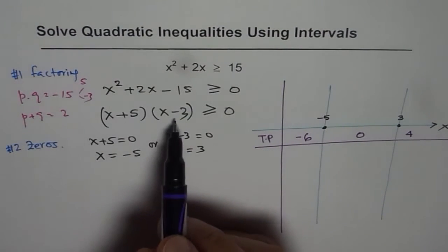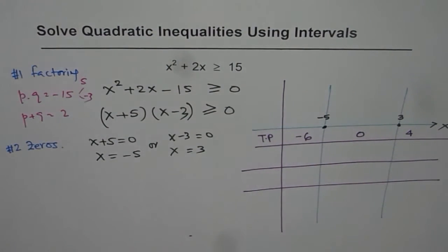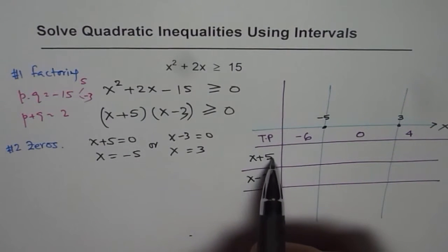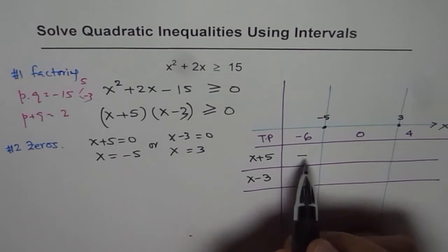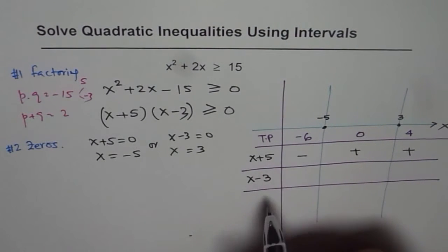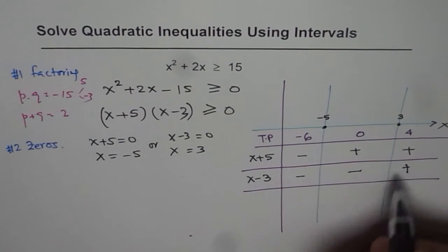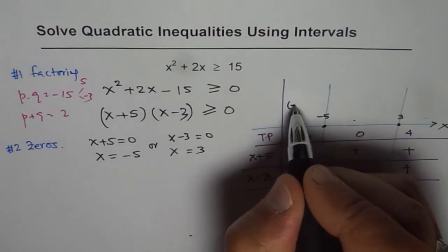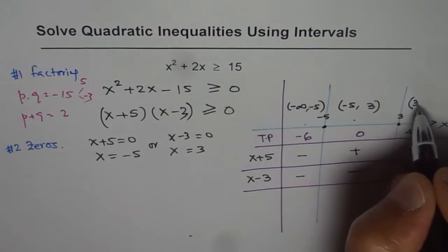We need to see whether our factors are positive or negative at each test point. The factors are x plus 5 and x minus 3. For x plus 5: at x equals minus 6, we get a negative value; at x equals 0, positive; at x equals 4, positive. For x minus 3: at x equals minus 6, negative; at x equals 0, negative; at x equals 4, positive (since 4 minus 3 equals 1). The three intervals are: negative infinity to minus 5, minus 5 to 3, and 3 to infinity.